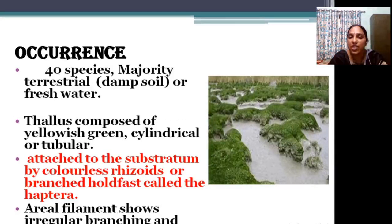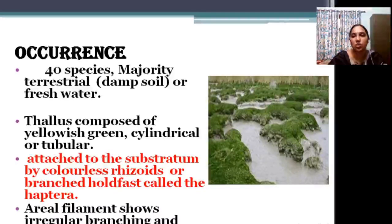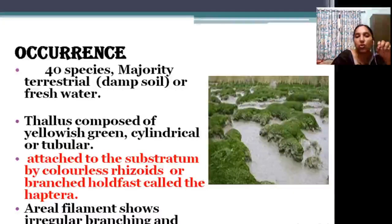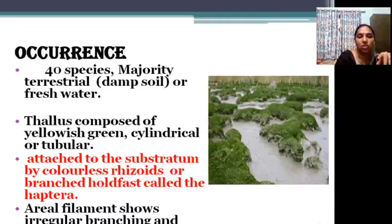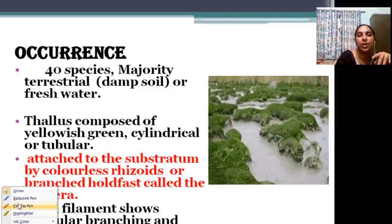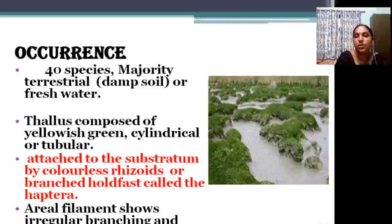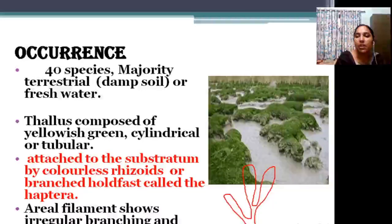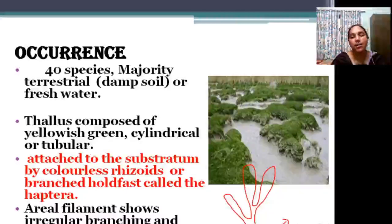Vaucheria is usually occurring in damp soils or fresh water. The thallus of this species contains green cylindrical or tubular structures. The thallus is green, cylindrical, and tubular, and they are attached to the substratum by a holdfast called haptera or rhizoids. I will draw the diagram — the filament is highly branched, and the basal portion is the haptera, also known as colourless rhizoids.